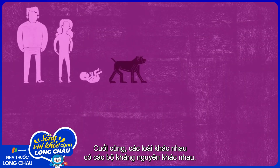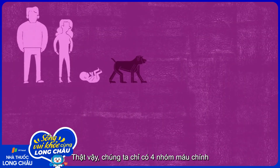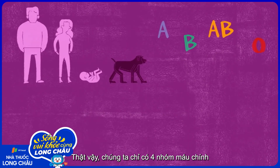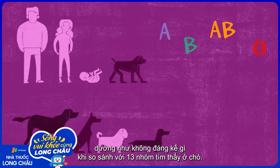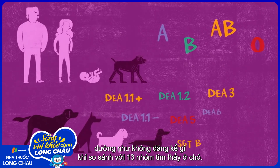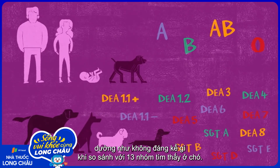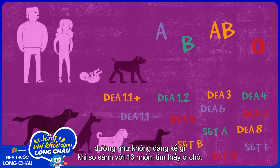Finally, different species have different sets of antigens. In fact, the four main blood types shared by us apes seem paltry in comparison to the 13 types found in dogs.